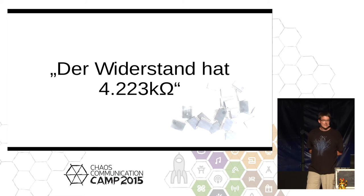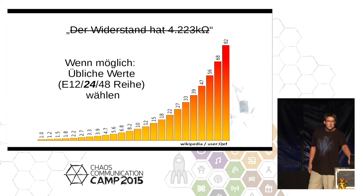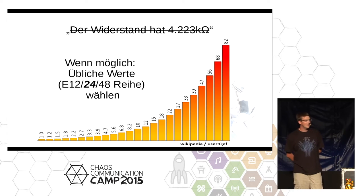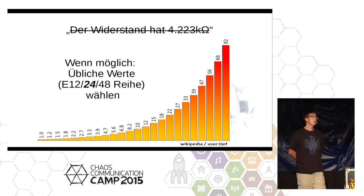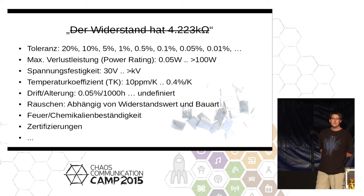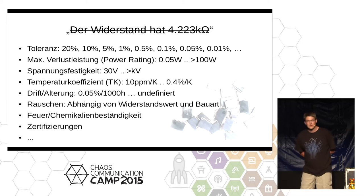Two things will appear across this whole talk. First: do you really need this? Second: is this really correct? This resistor has 4.223 kilo-ohms. It would be more practical to use standard values — you save a lot of hassle and things get cheaper. You could perhaps choose the same value as some other resistor on the board. And second: is it actually true? No, it's not. That resistor will not have exactly 4.223 kilo-ohms. There are tolerances, there are things that can damage a resistor, all kinds of things to look out for.